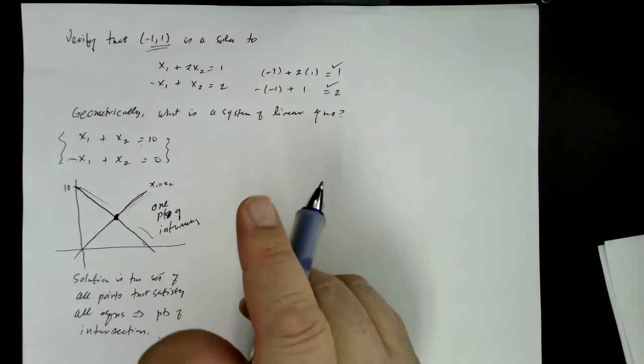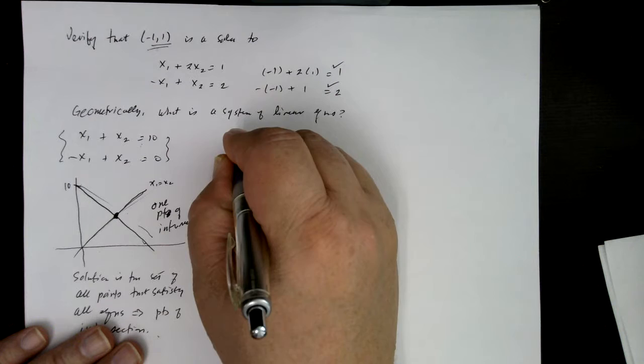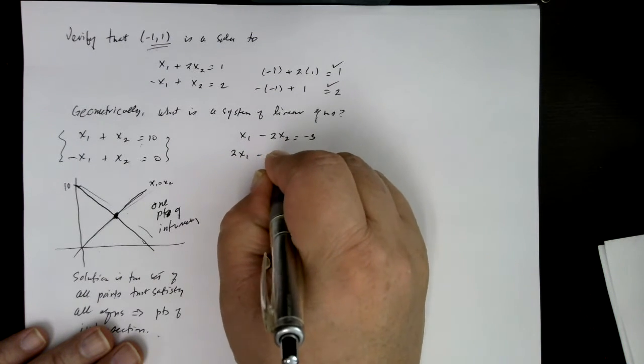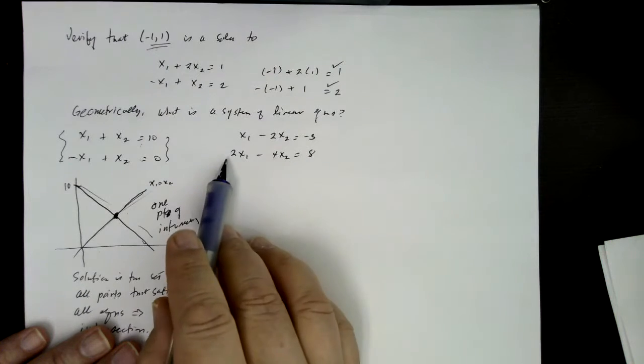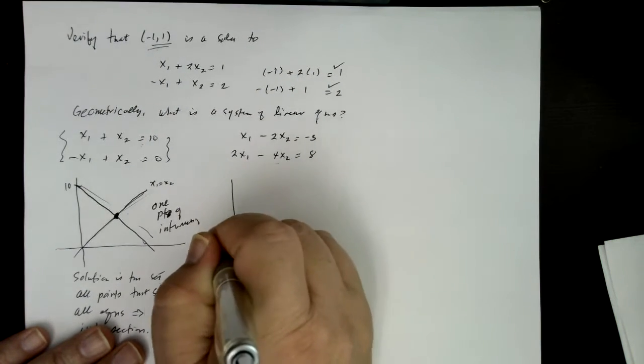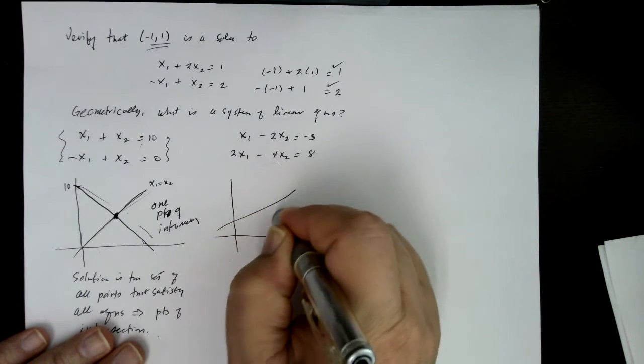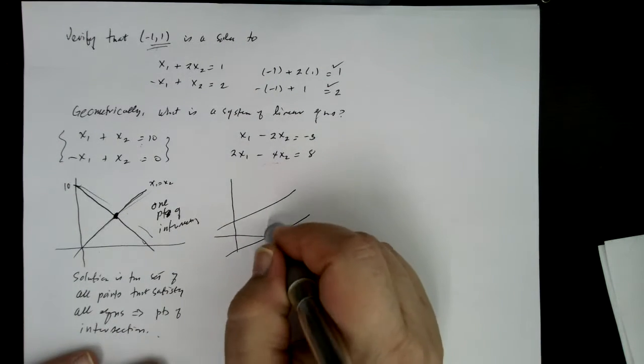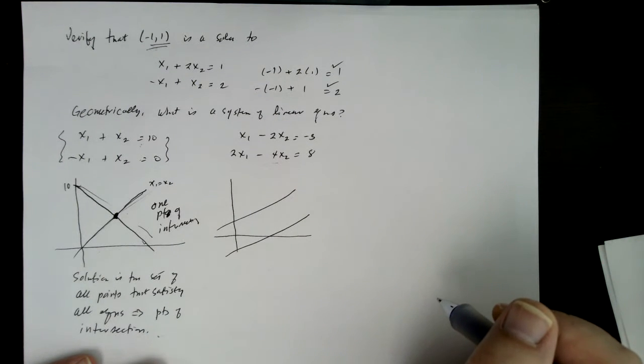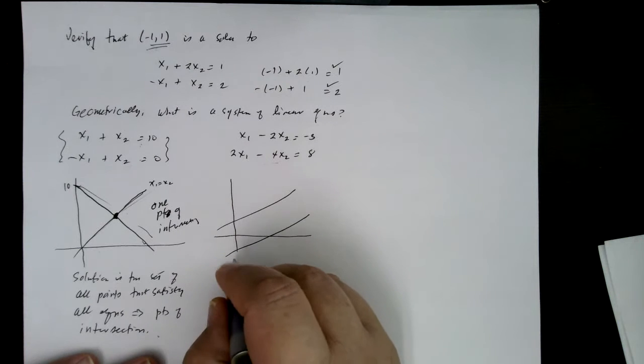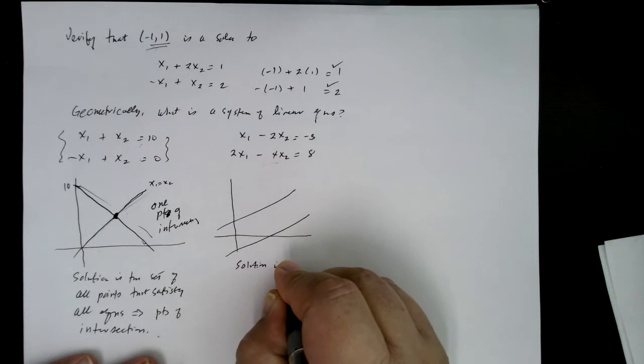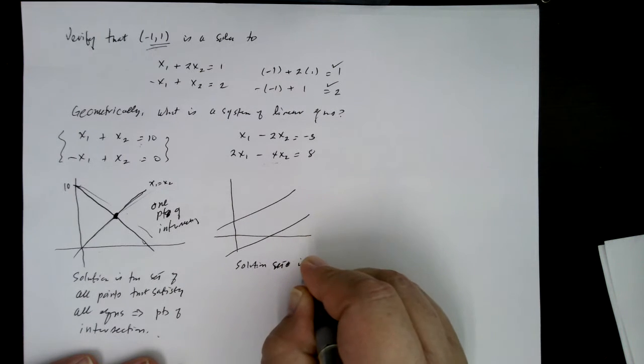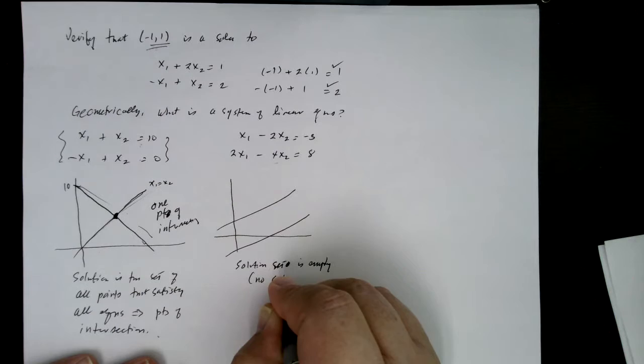But that's not the only way they could lie in the plane. You might have something like, let's consider x1 minus 2x2 equals minus 3, and 2x1 minus 4x2 equals 8. And you'll notice that I just multiplied these by 2 to get this. Therefore, what do these look like? Well, you can verify this later, but they're two parallel lines. And so therefore, do they have any points in common? The answer is no. So therefore, the solution is empty. There is no solution. The solution set is empty.